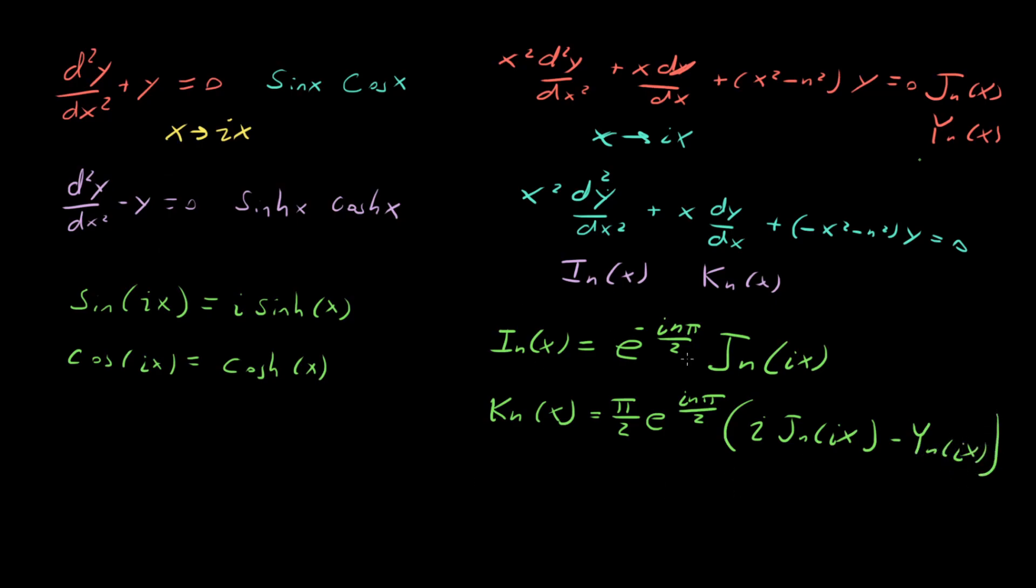So these are two perfectly valid linearly independent solutions to the modified Bessel equation. We have J_n(ix) and Y_n(ix), so this is linearly independent. That's fine. What's strange, though, is that it doesn't exactly follow the same logic as in the trig case.